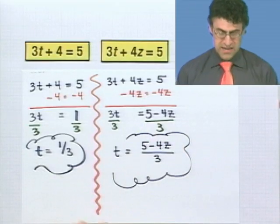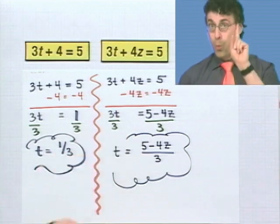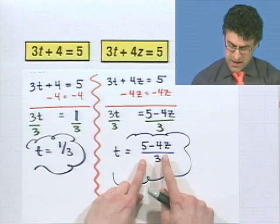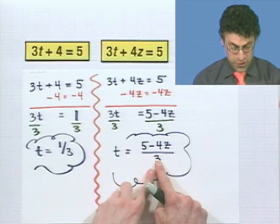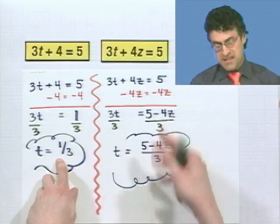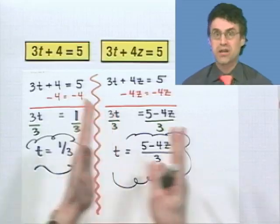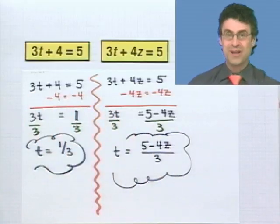Now, how do these relate? Well, notice that if I let z equal 1, if I put in 1 for z, then if I put in 1 for z, this is just 4. 5 minus 4 is 1. 1 third, I get this answer. So in some sense, this is a generalization of the previous equation. Kind of cool, huh? I love this stuff. This is great. How much fun is this?